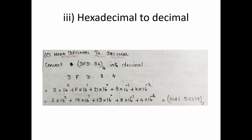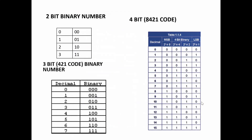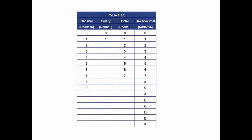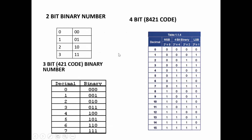Before moving to the last category — conversion between radices — we should know how to write binary numbers for decimal, octal, or hexadecimal. We will see how to write 2-bit, 3-bit, and 4-bit binary. For 2-bit: 0 = 00, 1 = 01, 2 = 10, 3 = 11. For 3-bit we use the 4-2-1 code.